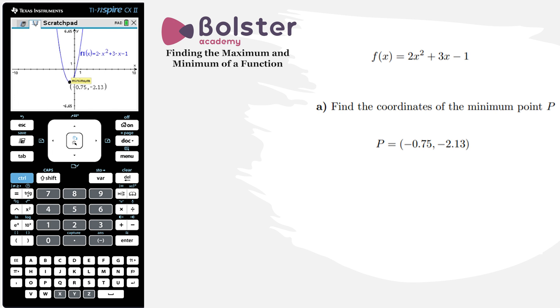And there it's found it, it's at minus 0.75 and minus 2.13. The last thing that we want to be able to do here is we want to be able to correctly interpret what this readout is telling us.